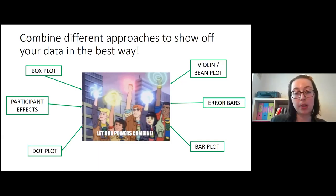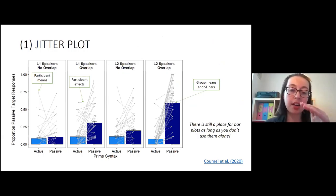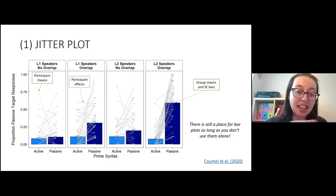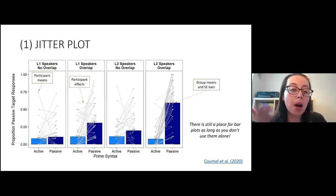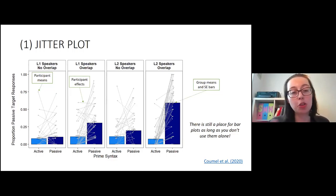I'm going to show you three different alternatives to bar plots that combine these elements. The first is a jitter plot, which includes a bar chart with means and standard error bars, plus individual participant means as gray dots, and lines connecting participant effects across conditions. Bar plots here still show overall means and summary statistics, but you also get information about participant effects. It's called a jitter plot because the dots are jittered so they don't all overlap.